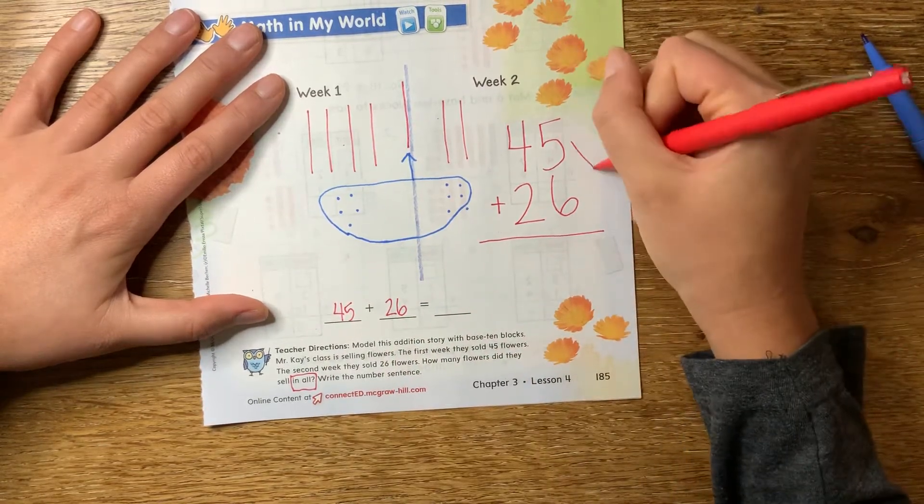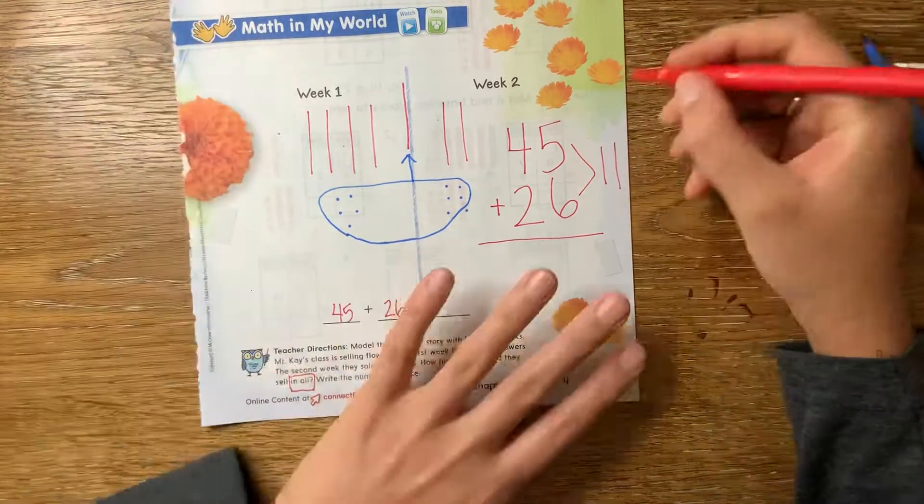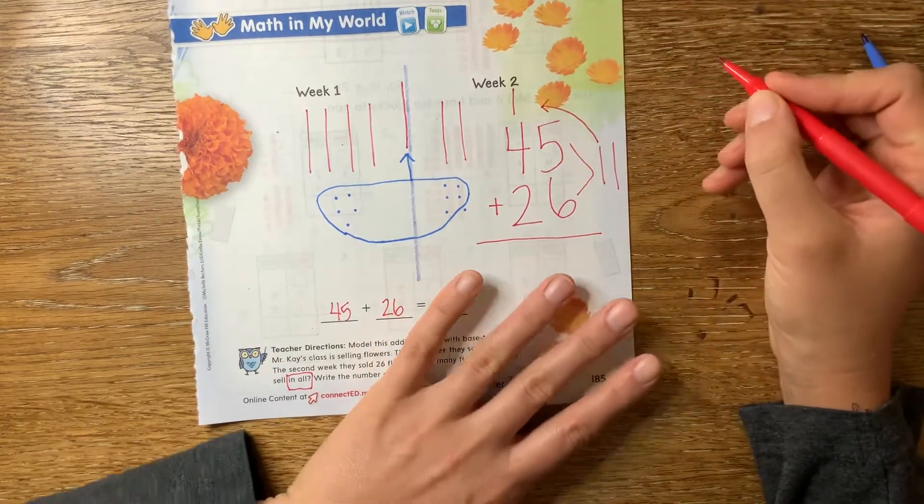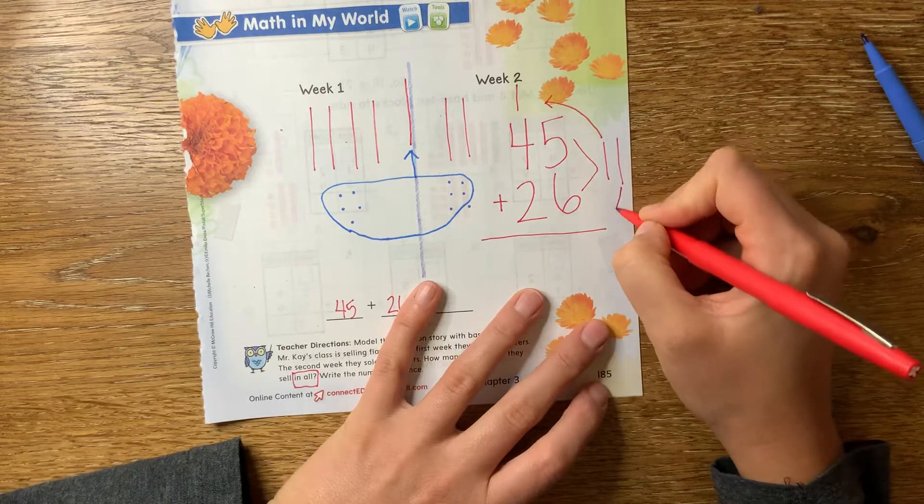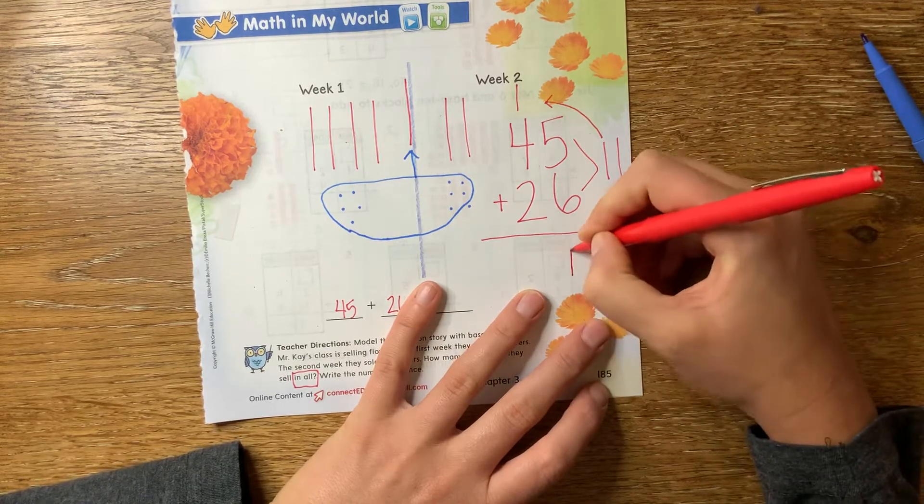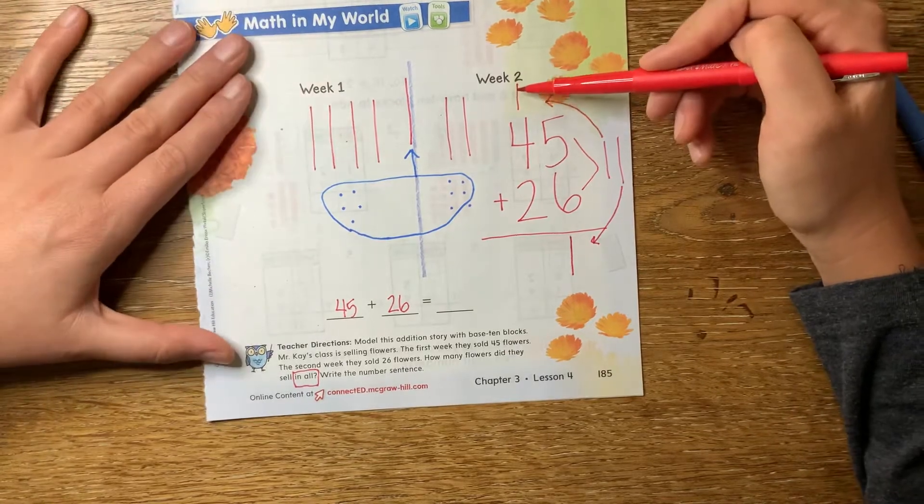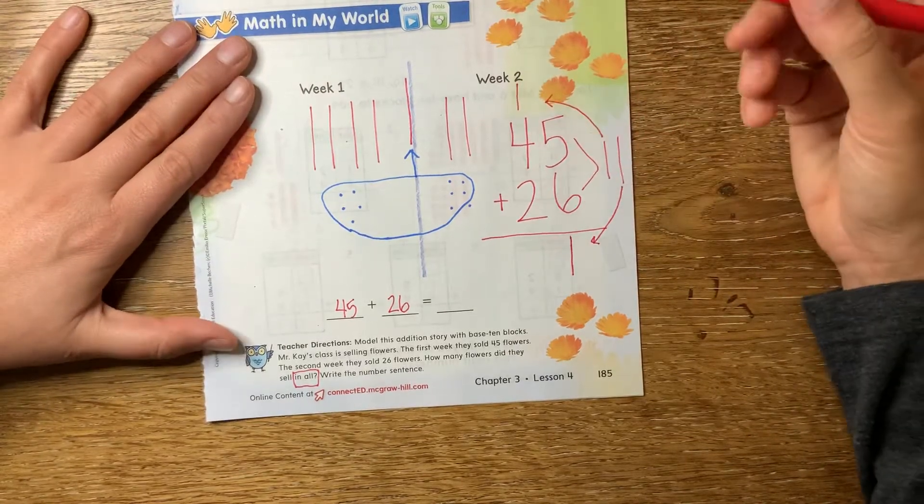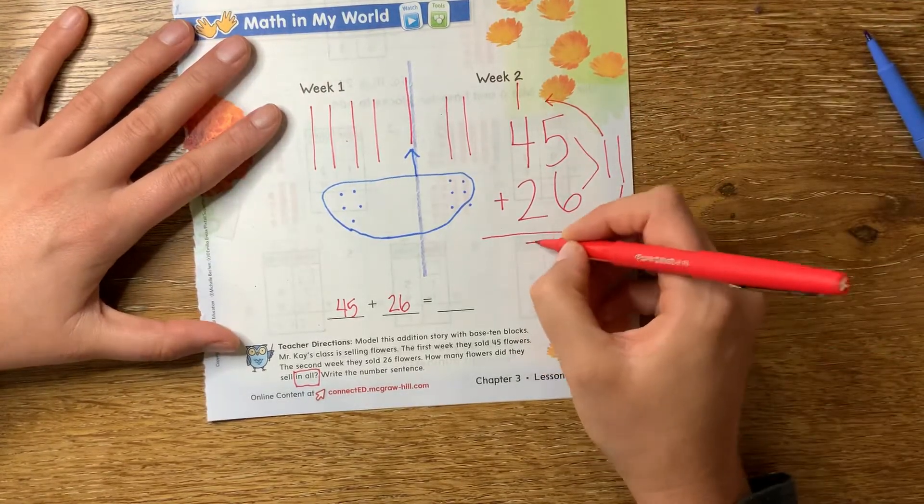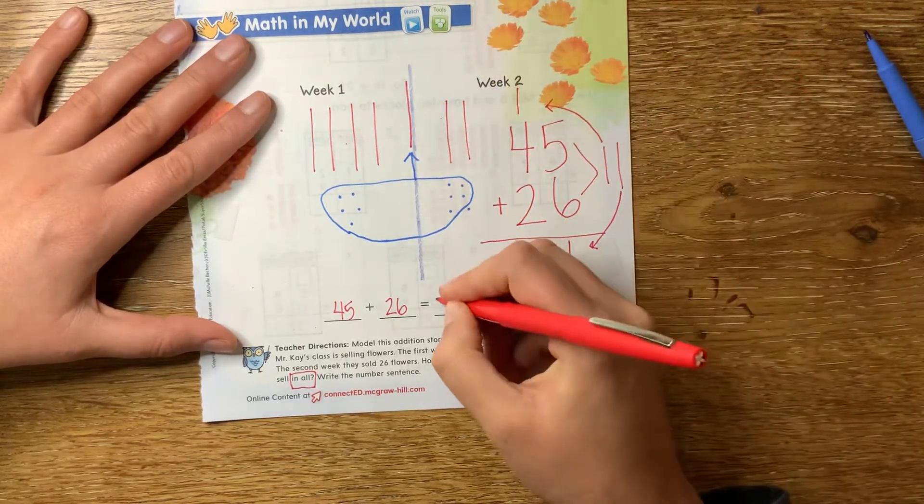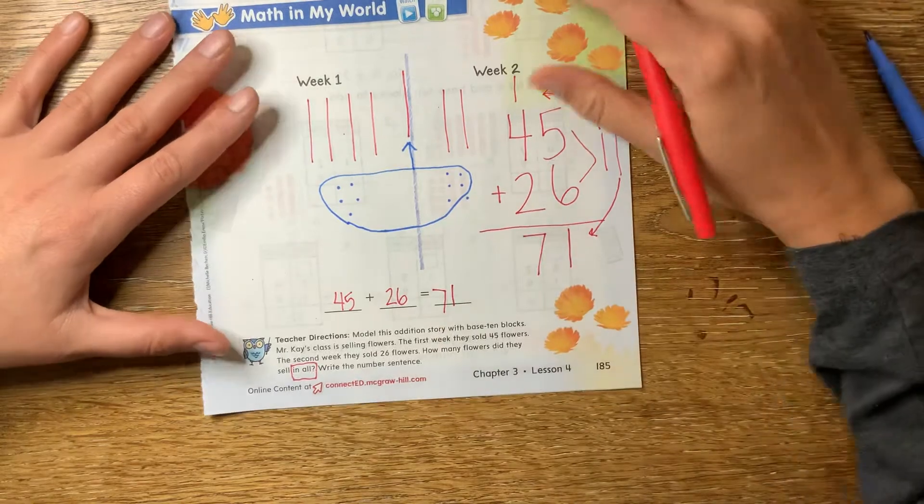So remember, in the number 11, that is one 10, so that 10 is going to get regrouped or carried up with the tens, and this one is going to go down in the ones place, okay? So now I have one 10 plus four tens plus two tens, that equals seven tens. So again, 71, 71. So there are 71.